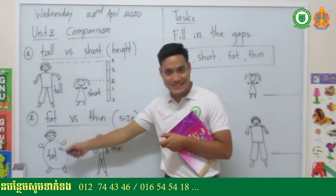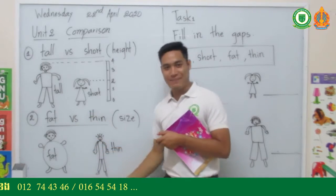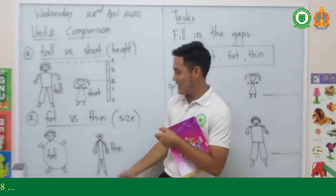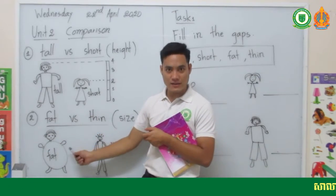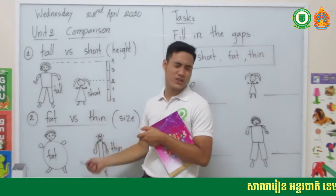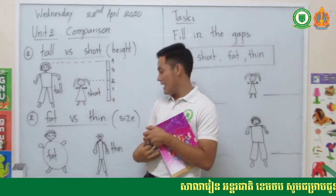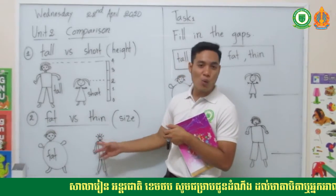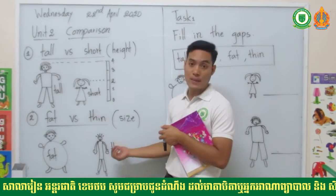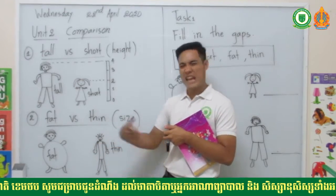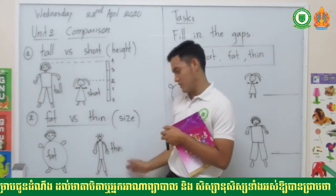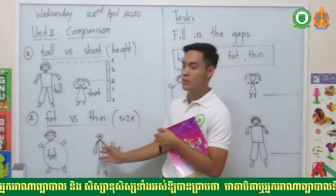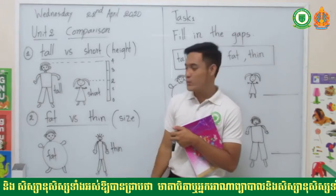They are best friends who love eating together and spending time together. But the problem is one of them eats too much food, especially fatty food. The other one is very lazy to eat — he eats only one or two times a day and sometimes just drinks water. That's why he looks very thin.